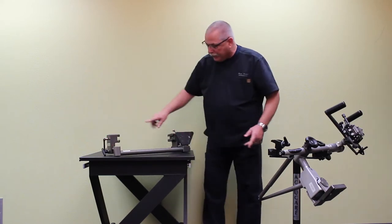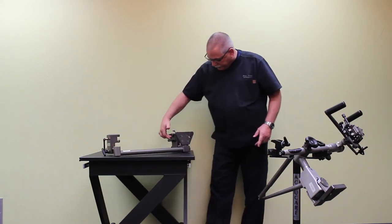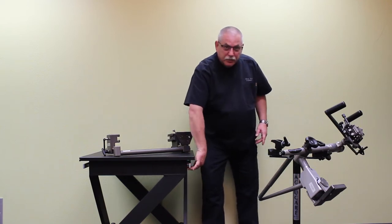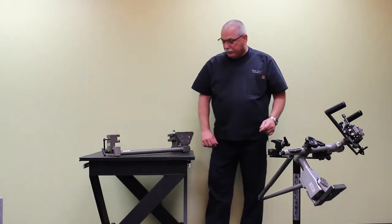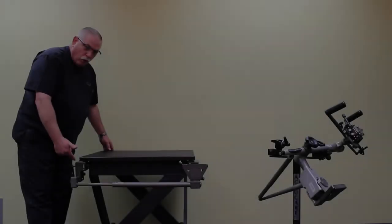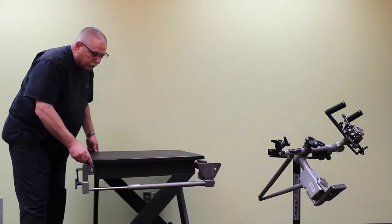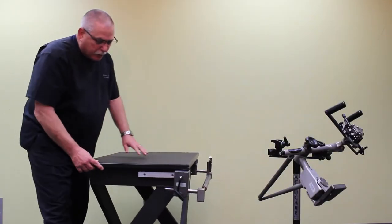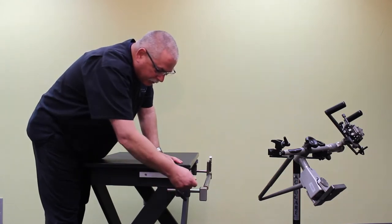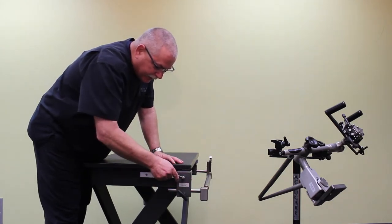I'm going to set it up here to show you that these areas are what will slip onto the rails on the side of your bed. Once you've slid it onto the table rails, I'm just going to show you real quickly. You'll want to tighten it down to the rails using this.